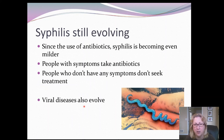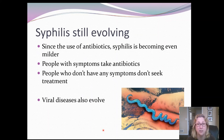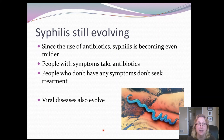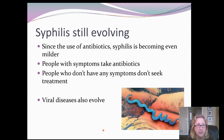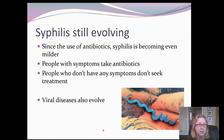Syphilis has continued to evolve. Since the 1940s and 50s, antibiotics have become a major weapon against syphilis. People who know they have it — who have symptoms, a visible sore, or a fever — seek medical treatment, get antibiotics, and kill the bacteria. The syphilis bacteria that survive are ones that cause the mildest, symptom-free illness. There's been a great increase in people who are carriers of syphilis who can transmit it to others but have little or no symptoms, because if you don't have symptoms, you don't seek treatment.